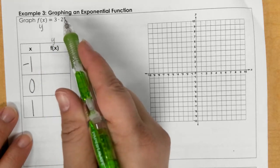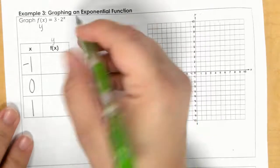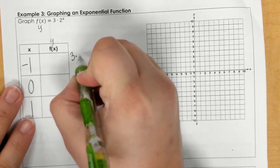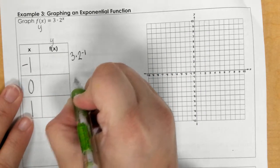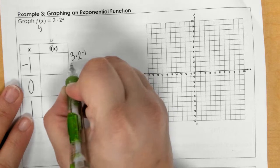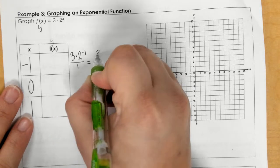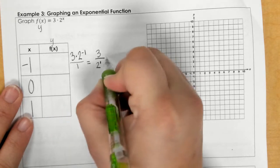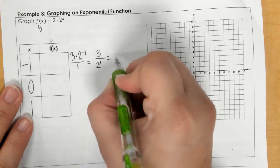Now I'm going to plug those in for x right up here, which we did on the front side. So, I've got 3 times 2 to the negative 1. Can't have a negative, so I'm going to put this over 1 and bring the negative down. But 2 to the first is just 2.